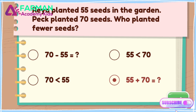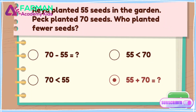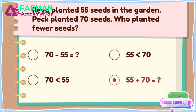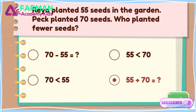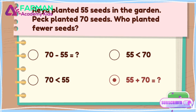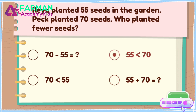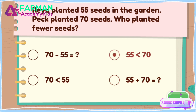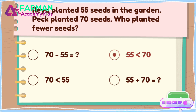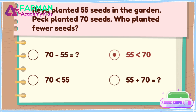We're comparing how many seeds the friends planted. Make sure to pick an answer with a greater than or less than sign. Tap on the word problem. 55 is less than 70, which reflects the word problem.